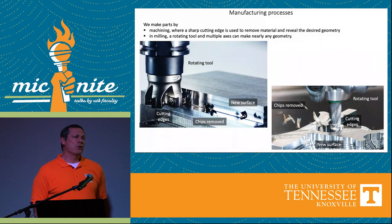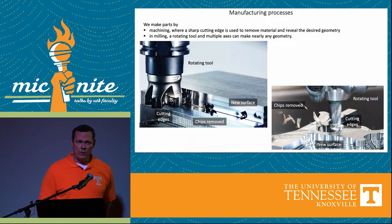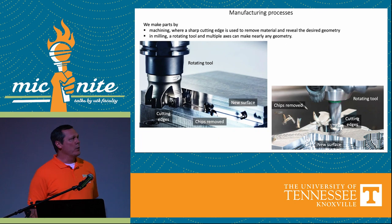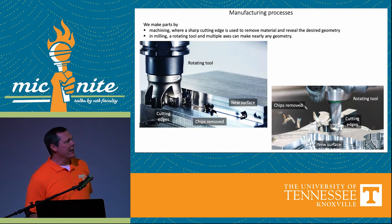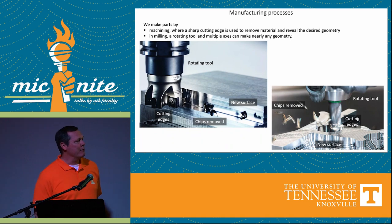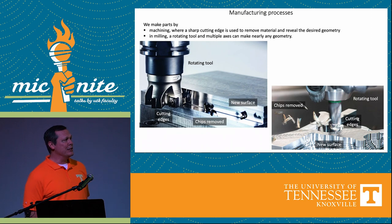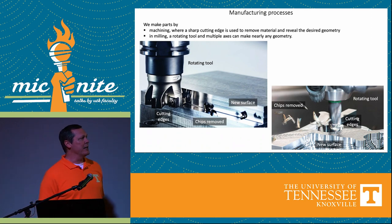There are different ways we can make parts. One of those is machining, where we have a sharp cutting edge on a rotating tool and we remove material to reveal the desired geometry. The photos here on the left and right show two milling operations where we have a rotating cutter to produce nearly any geometry as we move that tool through space.